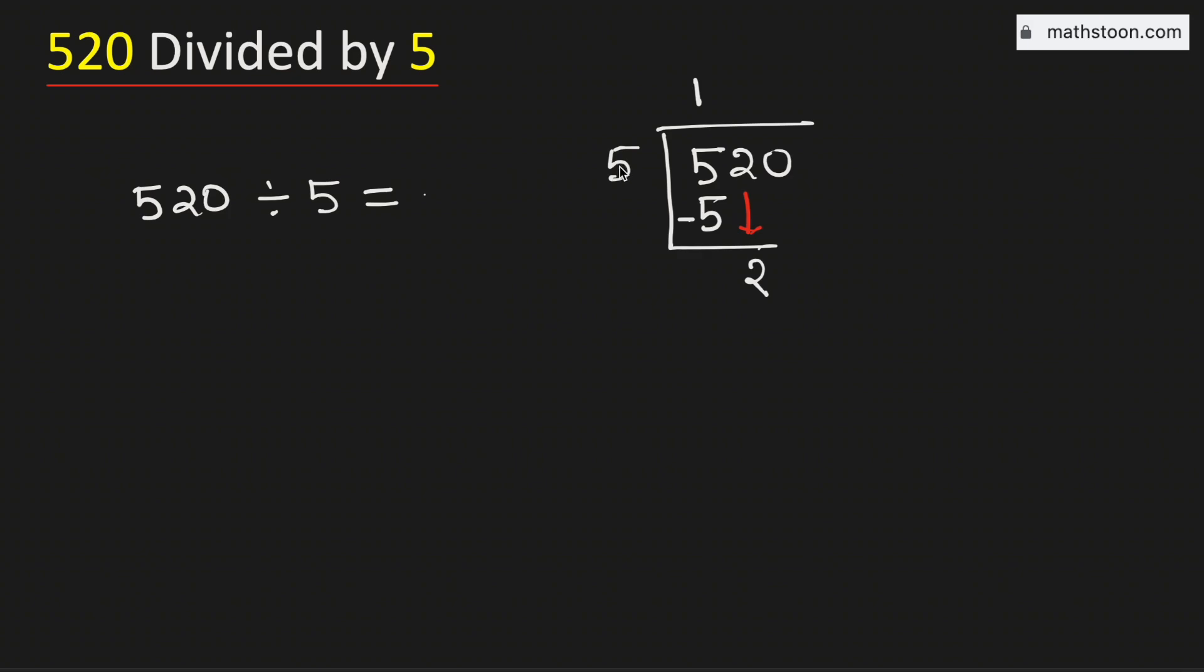And from the multiplication table of 5, we know that 5 times 0 is 0. Subtract, we get 2.